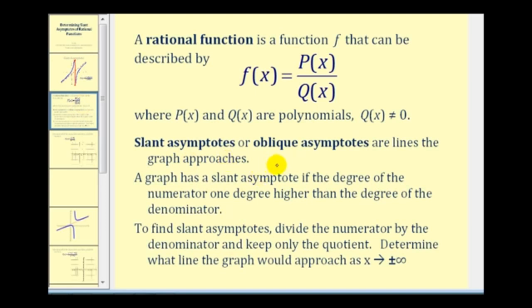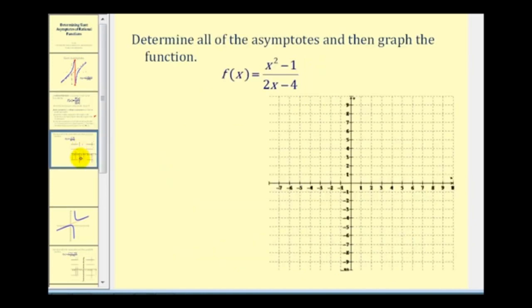Slant asymptotes, sometimes called oblique asymptotes, are lines the graph approaches. A graph has a slant asymptote if the degree of the numerator is one degree higher than the degree of the denominator. If it satisfies this condition, to find the slant asymptote we divide the numerator by the denominator and determine what line the graph approaches as x approaches positive or negative infinity. The equation of the line comes only from the quotient part — we disregard the remainder.